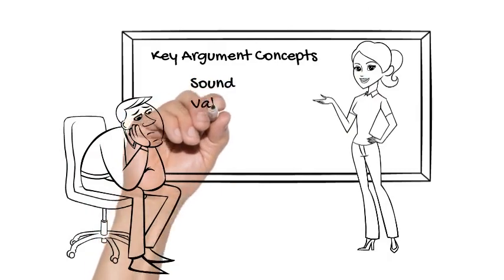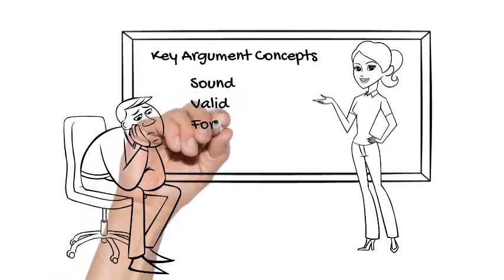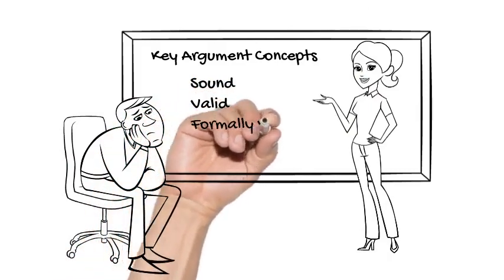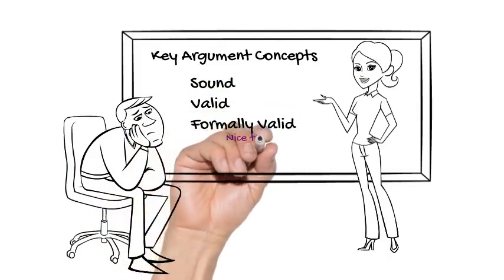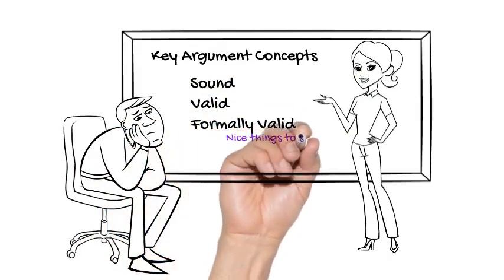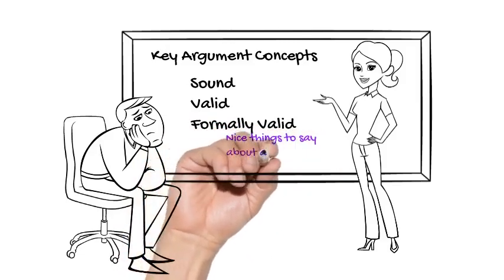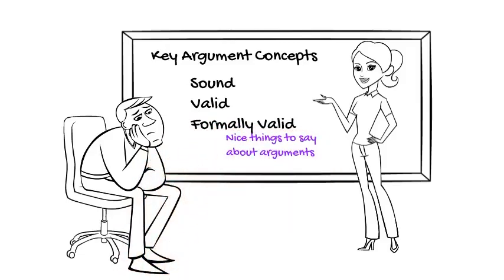The first group of three concepts are the concepts of soundness, validity, and formal validity. And what these three concepts have in common is that they are all nice things to say about arguments. I mean in the sense of being compliments. It is a good thing for an argument to be sound, valid, or formally valid.